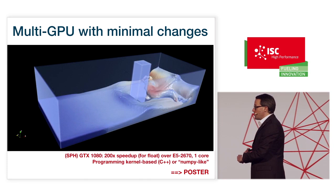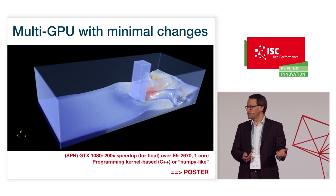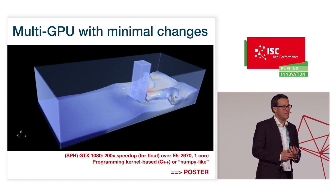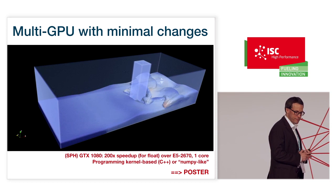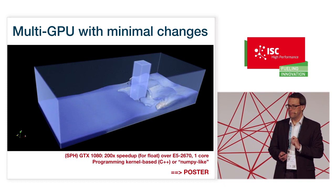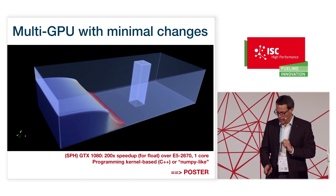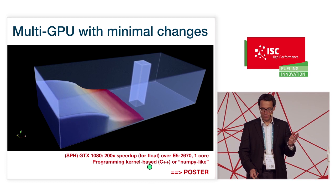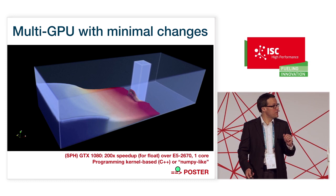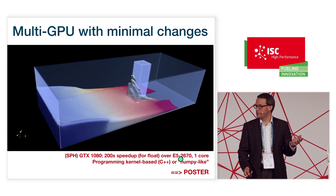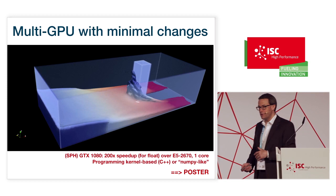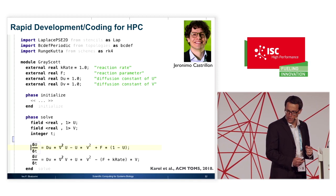Another nice thing about template metaprogramming in scientific computing is that we can switch to GPUs or multi-GPU clusters. The same dam break experiment run on a GTX 1080 runs about 200 times faster than on a Xeon core, with very minimal change to the source code. Importantly, no CUDA had to be written by the application programmer — all the CUDA code was automatically generated by the compiler. OpenFPM supports two types of GPU programming: the more traditional kernel-based paradigm where the kernel is written in C++ rather than CUDA, or something more like NumPy or MATLAB using vector and tensor notation from which CUDA code gets automatically generated. There is going to be a poster about the GPU part of OpenFPM at this conference.